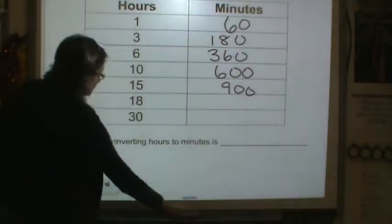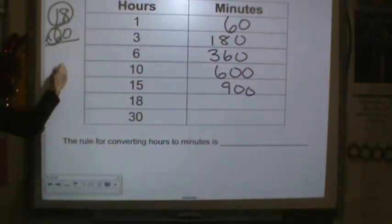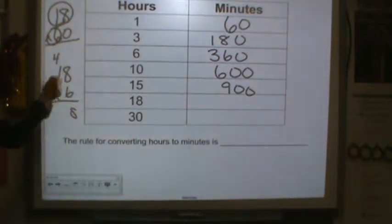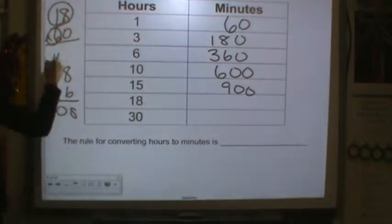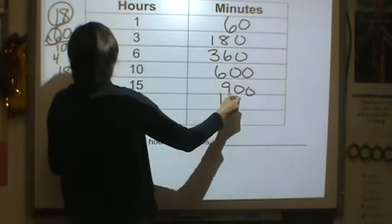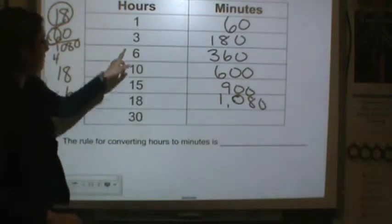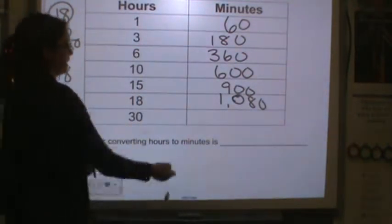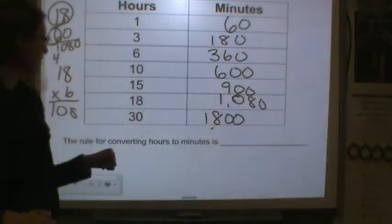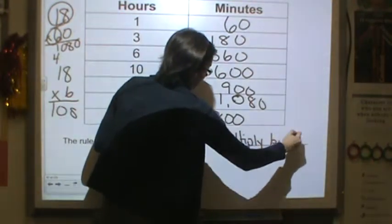18 hours and 60 minutes. Remember, I'm going to do the basic facts. 6 times 18. 6 times 8 is 48. 6 times 1 is 6 plus 4 is 10. And then remember, I need to add that 0. 1,080 minutes. And then 3 hours had 180, so it would be 1,800 minutes. So the rule for converting hours to minutes is multiply by 60.